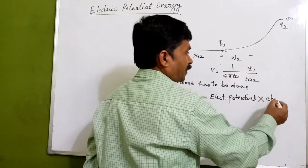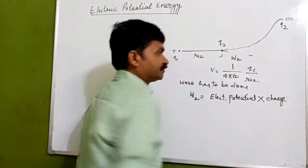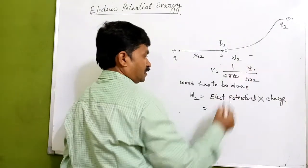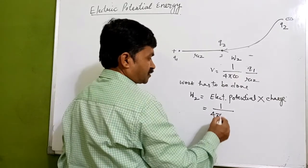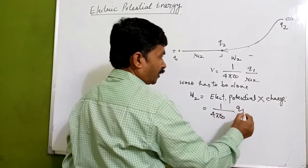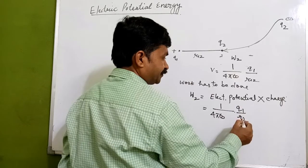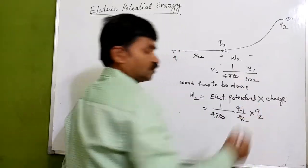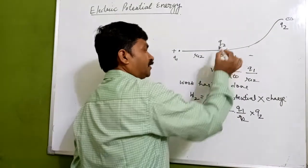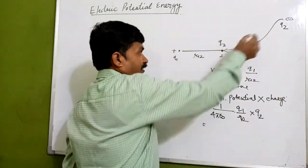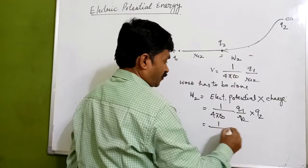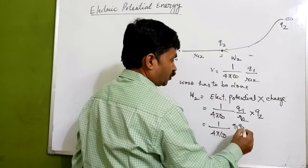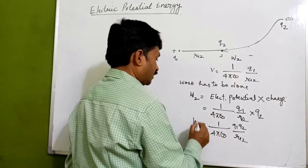The work done W2 equals the electric potential of this point multiplied by the charge q2. Substituting the electric potential as 1/(4πε₀) × q1/r12, we get W2 = (1/4πε₀) × q1q2/r12. This is the work done.